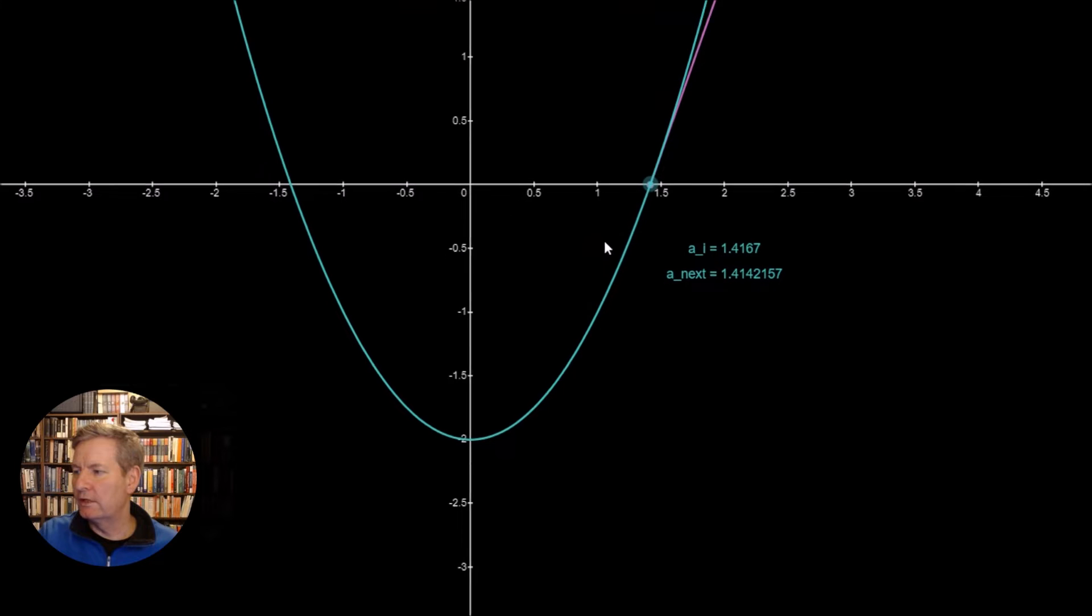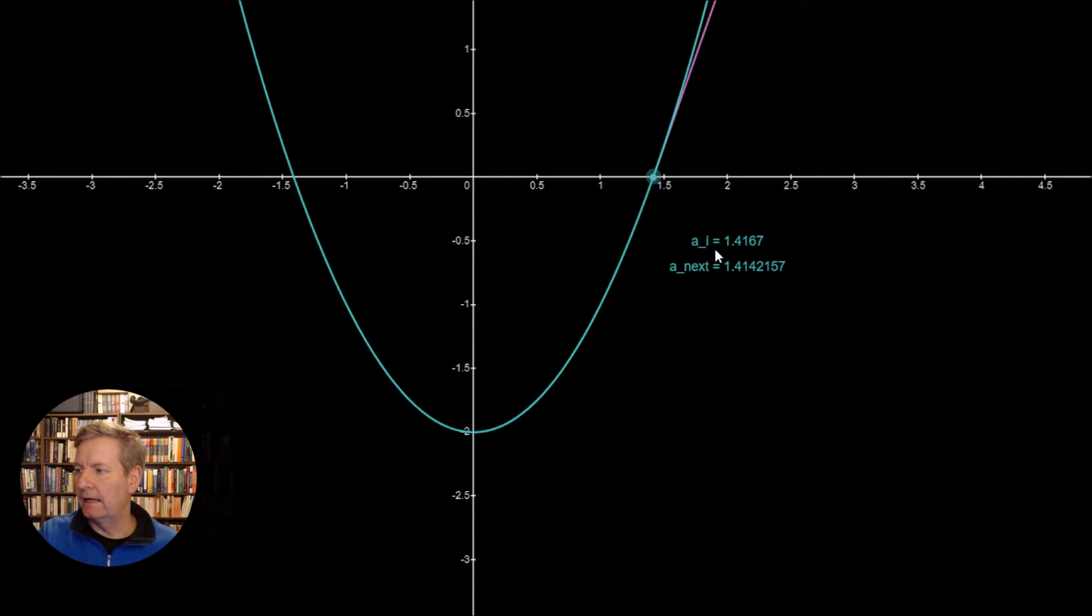So within two or three iterations we've actually got to the root of this equation. And you can see here that we've got the ai in this instance becomes the previous value which is 1.4167. And the next value is 1.414. So we get through this continuous process over a few iterations in order to generate an approximation to the root of this function.